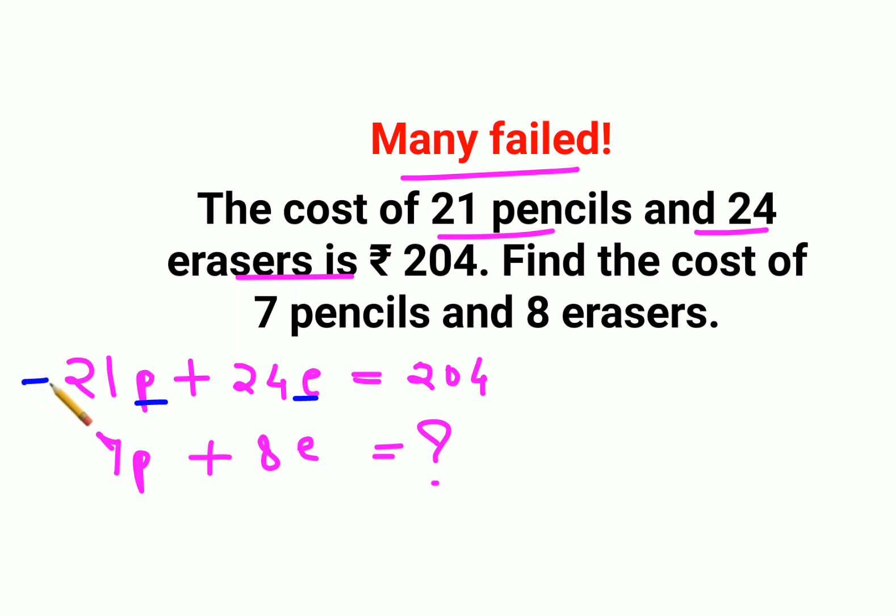when you divide this entire equation by 3, what happens is you will get 7p plus 8e is equal to 68.